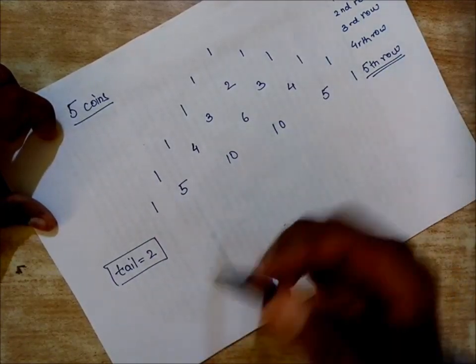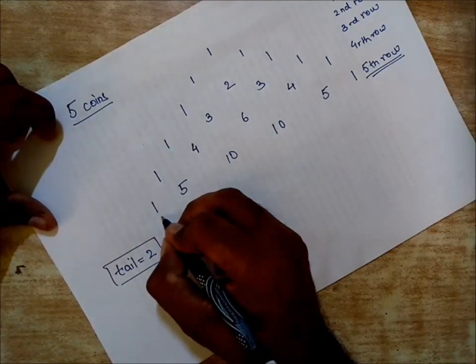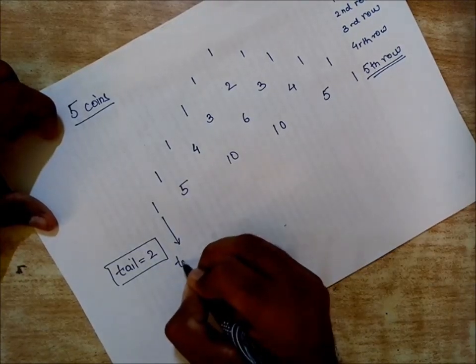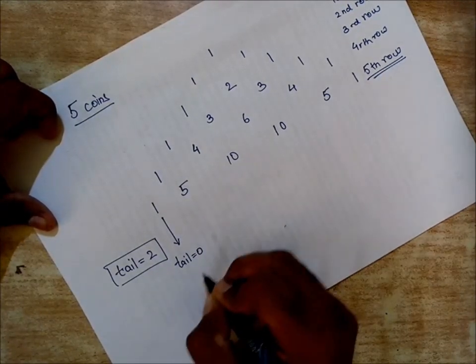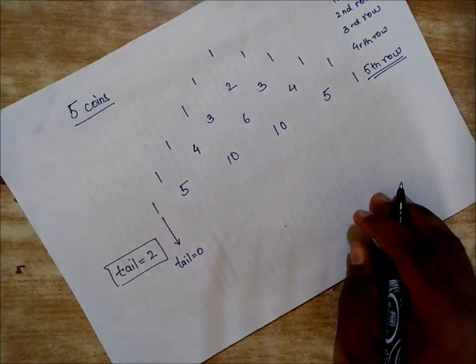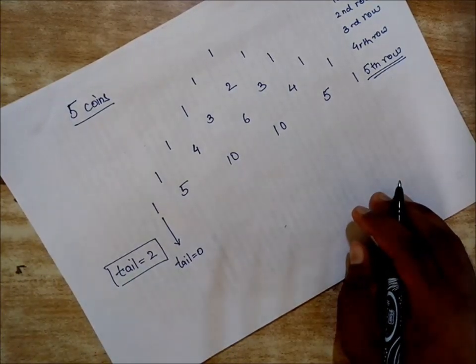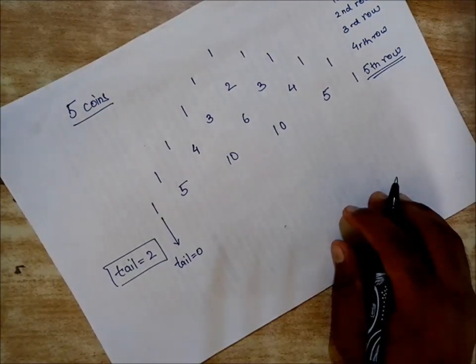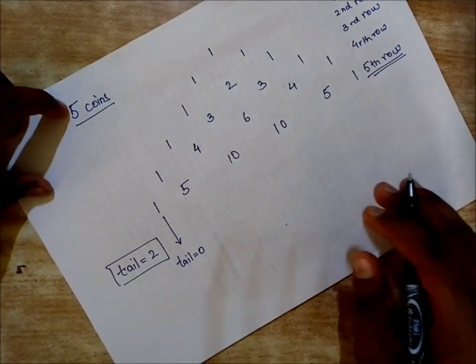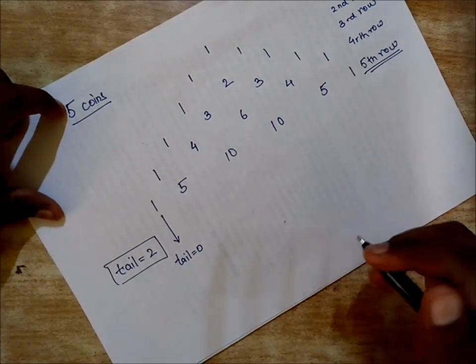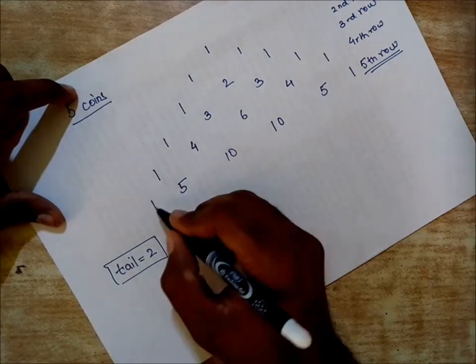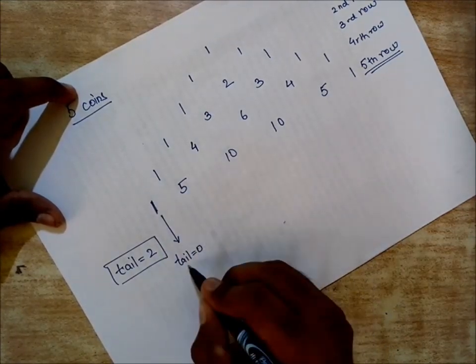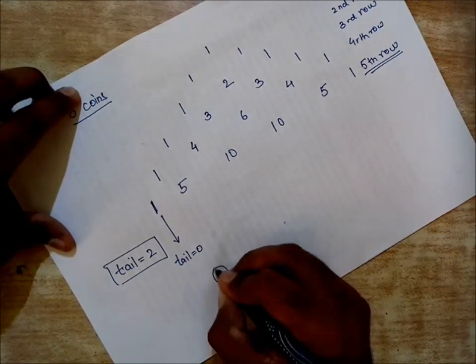For example, this will tell you that tail equals zero, meaning no tail is available. This seems clear because if there is no tail, then the only combination possible is all heads. If I say there is one way when tail is zero, that means I have five coins.